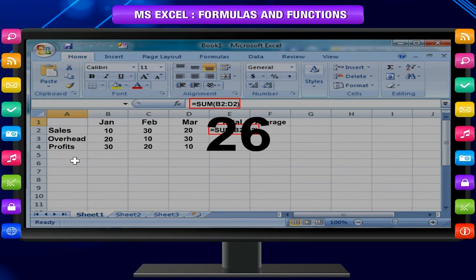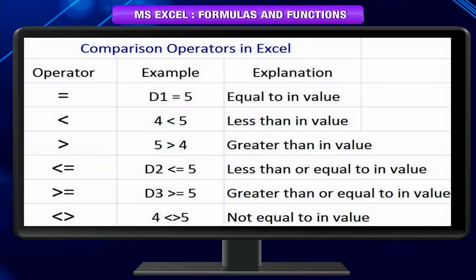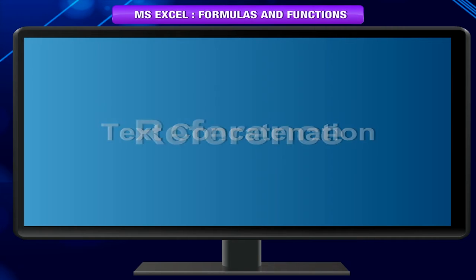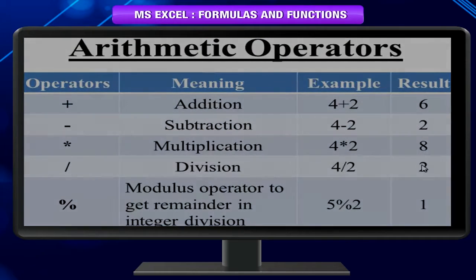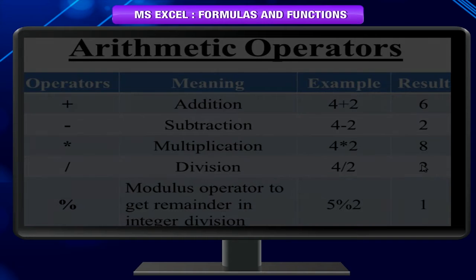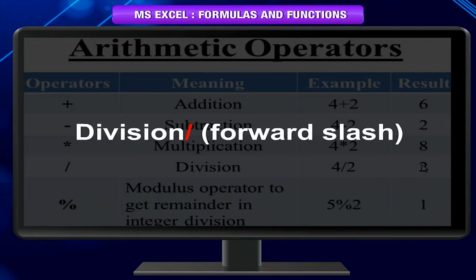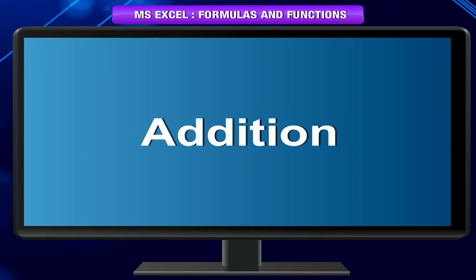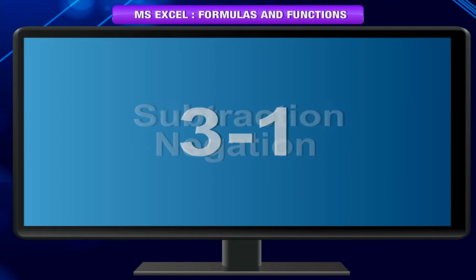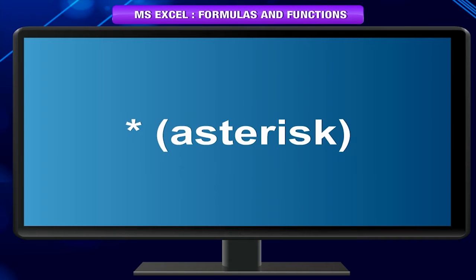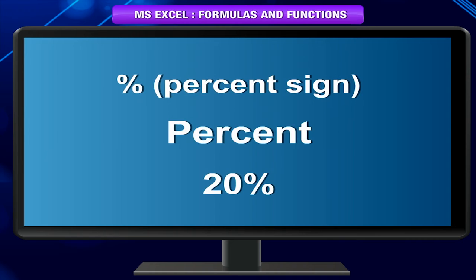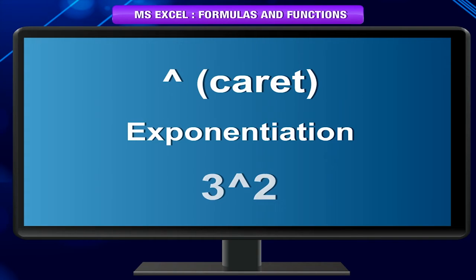Operators in formulas: Operators specify the type of calculation that you want to perform on the elements of a formula. There are 4 types of operators: Arithmetic, Comparison, Text Concatenation, and Reference. Arithmetic operators are used to perform basic mathematical operations such as addition, subtraction, multiplication, division, etc., and produce numeric results. Examples: Plus sign (addition, 3+3), Minus sign (subtraction/negation, 3-1, -1), Asterisk (multiplication, 3*3), Forward slash (division, 3/3), Percentage sign (percent, 20%), Caret (exponentiation, 3^2).